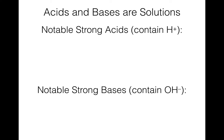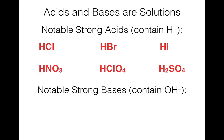Another thing to know is acids and bases. We haven't talked too much about acids and bases, but they are solutions very commonly used in chemistry. Acids contain the hydrogen ion, so you can recognize them by the H in front. We have hydrochloric, hydrobromic, hydroiodic, nitric, perchloric, and sulfuric acid. These are all strong acids.